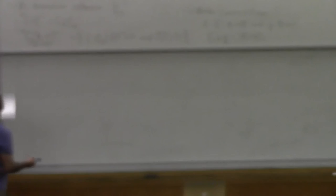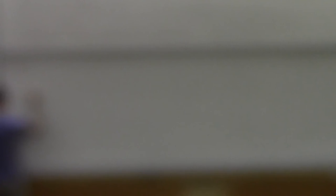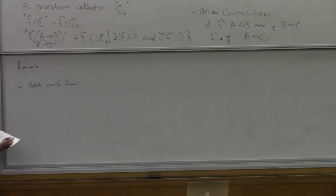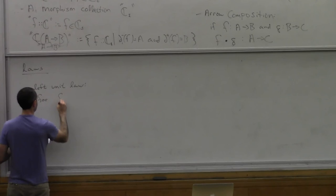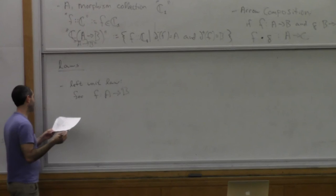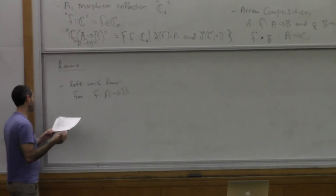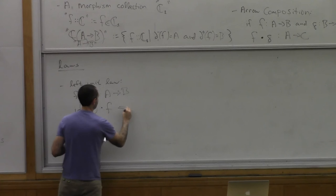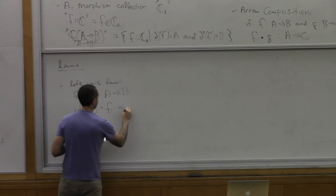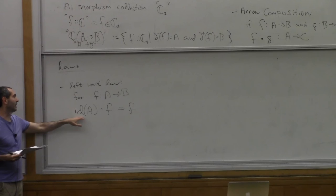That's the data. But now there's also some laws. So I wrote data there, so now I've got laws. And so the first law is the left unit law of composition. I'll say of composition but not write it. And this says, for arrow F from A to B, whatever the category is, it's C, the identity arrow on A followed by F equals F. So this is just saying that the identity arrow is a left unit of composition, or pre-unit of composition.